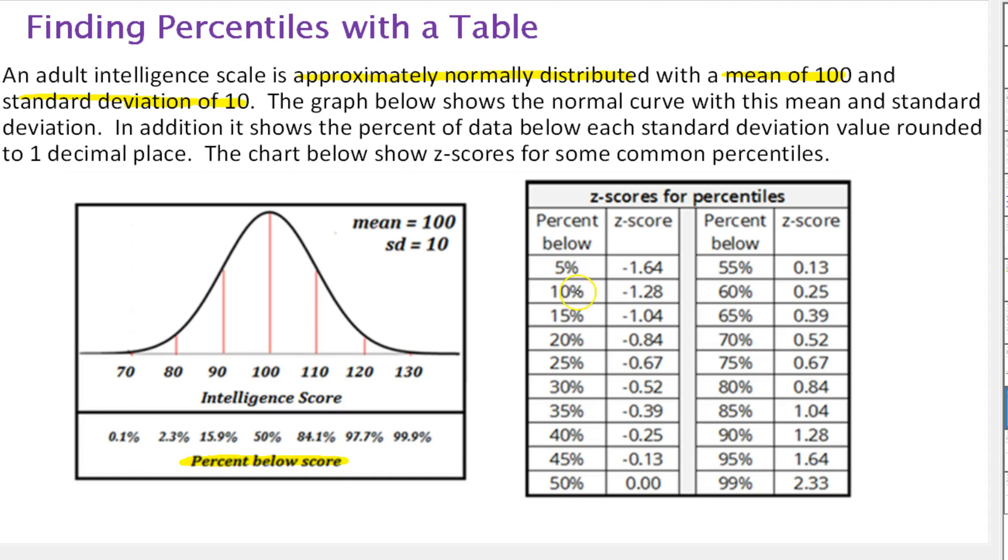We're going in increments of 5 because there are 100 of them and we don't want to list all of them. And then I also included 99. So that's the largest percentile. The 99th percentile is 2.33 standard deviations above the mean. So that tells us 99% of the data lie to the left of that.